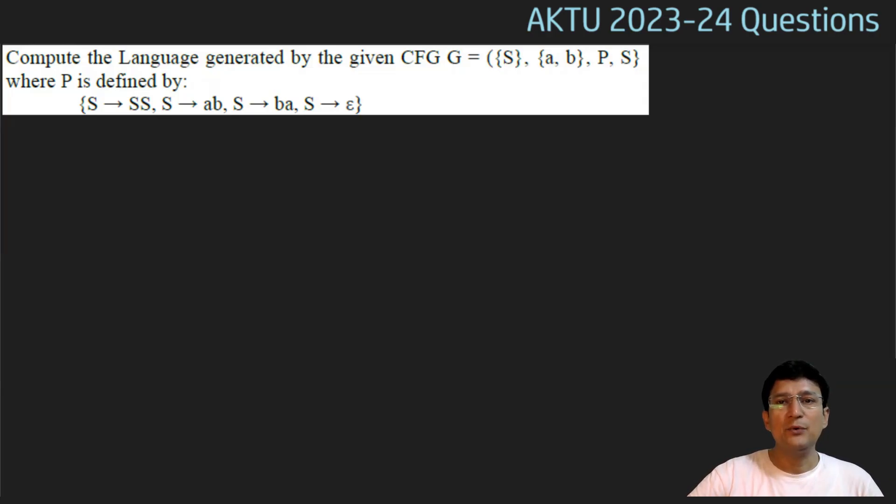You know, in context-free grammar, there are four tuples. In four tuples, S is denoting the start symbol. A and B are denoting the terminals. P is denoting the productions. S is denoting the variable term.